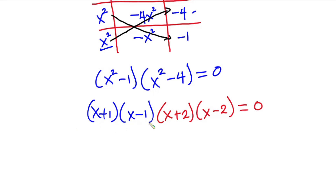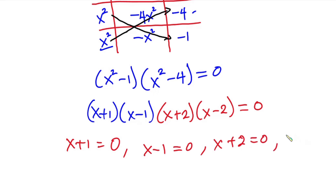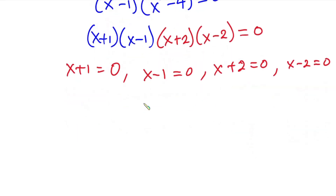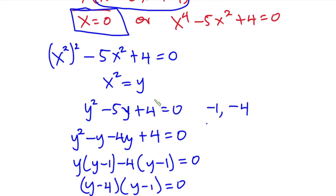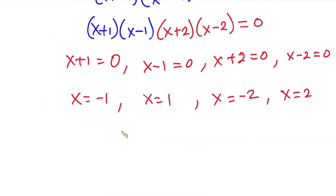Setting each factor equal to zero: x plus 1 equals zero gives x equals negative 1; x minus 1 equals zero gives x equals 1; x plus 2 equals zero gives x equals negative 2; and x minus 2 equals zero gives x equals 2. Don't forget that we also had x equals 0 from earlier. So putting everything together: x equals negative 1, 0, 1, negative 2, and 2.